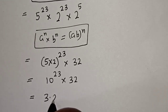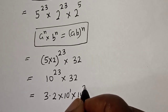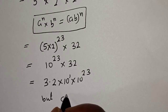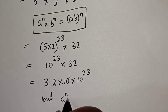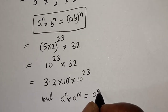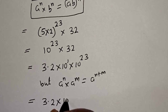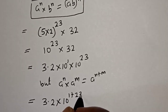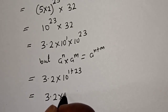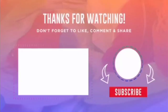We have 3.2 times 10 raised to power 1, times 10 raised to power 23. Using the rule that a raised to power n multiplied by a raised to power m is equal to a raised to power n plus m, this is equal to 3.2 times 10 raised to power 1 plus 23, which is equal to 3.2 times 10 raised to power 24. And that is our final answer.